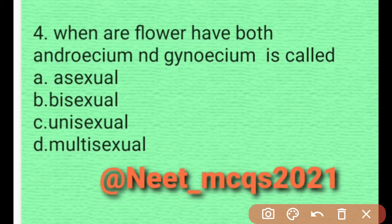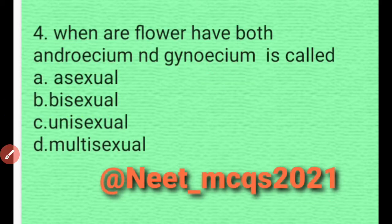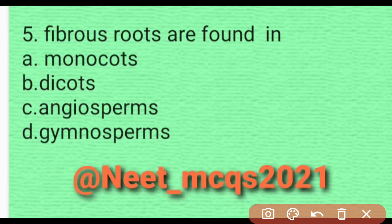Question 3: When a flower has both androecium and gynoecium, it is called — so when a flower has both male and female reproductive parts in a single plant, it is basically bisexual. Option B is correct.